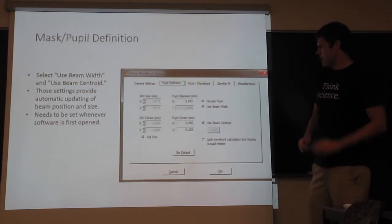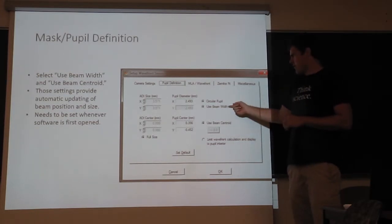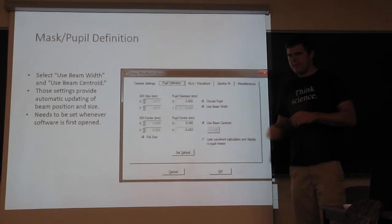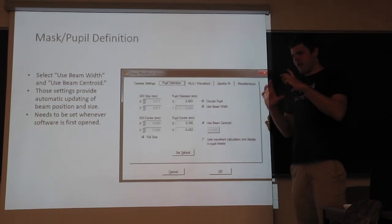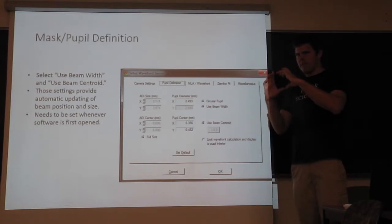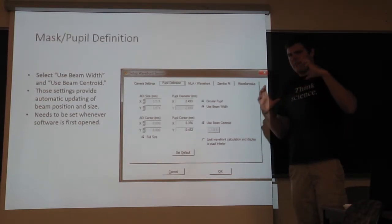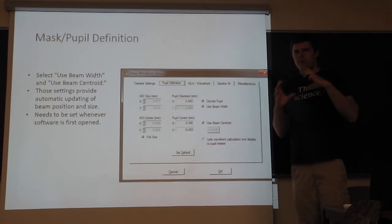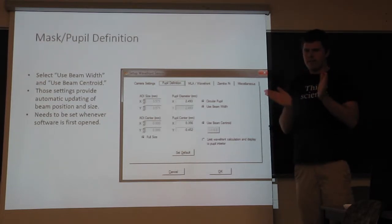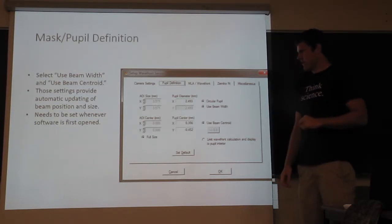Next, this is the pupil definition page. And this is where if you use beam width and use beam centroid, then this will have the pink cross and the pink circle. The cross will automatically calculate the beam centroid and keep the analysis pupil centered on that. And then if you use beam width, it will automatically adjust the circle diameter to follow the beam as it changes. Say if you're focusing or defocusing it, it will change the size so it calculates the Zernike's correctly.